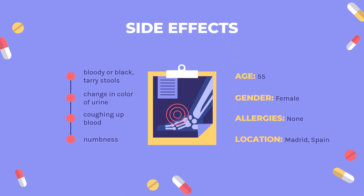Side effects include: bloody or black tarry stools, change in color, frequency, or amount of urine, chest pain, shortness of breath, coughing up blood, pale stools, numbness, weakness, flu-like symptoms, leg pain, vision problems, speech problems, problems walking, weight gain, stomach pain, cold sweat.